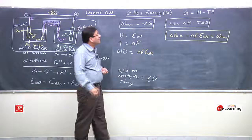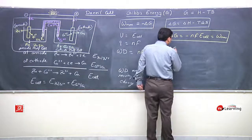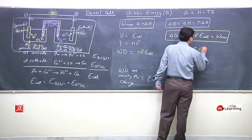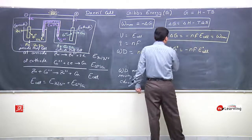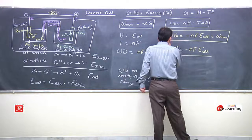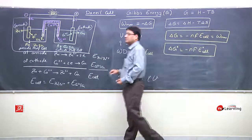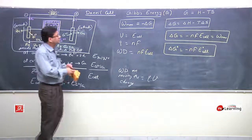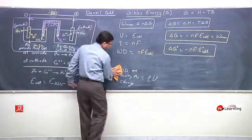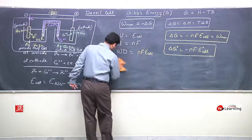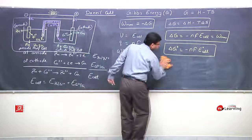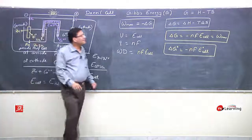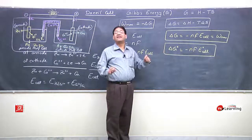When the cell is kept at standard conditions, we write delta G° equals minus nFE° of cell. This is the change in Gibbs free energy of any galvanic cell at standard conditions.